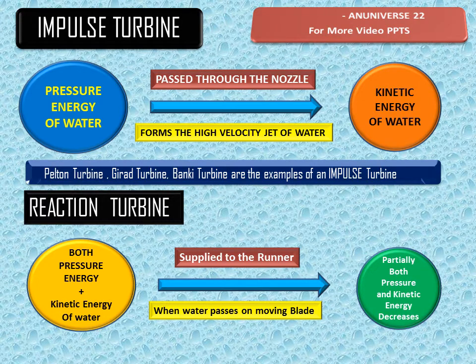Both energies decrease, but at the outlet the velocity head is greater than the pressure head. In order to reduce the velocity head and increase the pressure head, we need a draft tube.